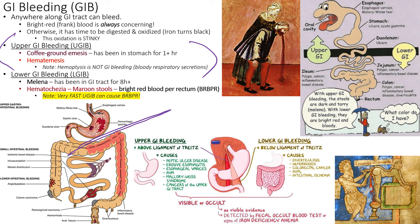Hematemesis means vomiting blood (hema = blood, emesis = vomit), and must be differentiated from hemoptysis — coughing up blood from the respiratory tract, as in TB. You can insert an NG tube to determine if bleeding is from the stomach. The ligament of Treitz holds up the duodenum — anything from the duodenum upward is an upper GI bleed.